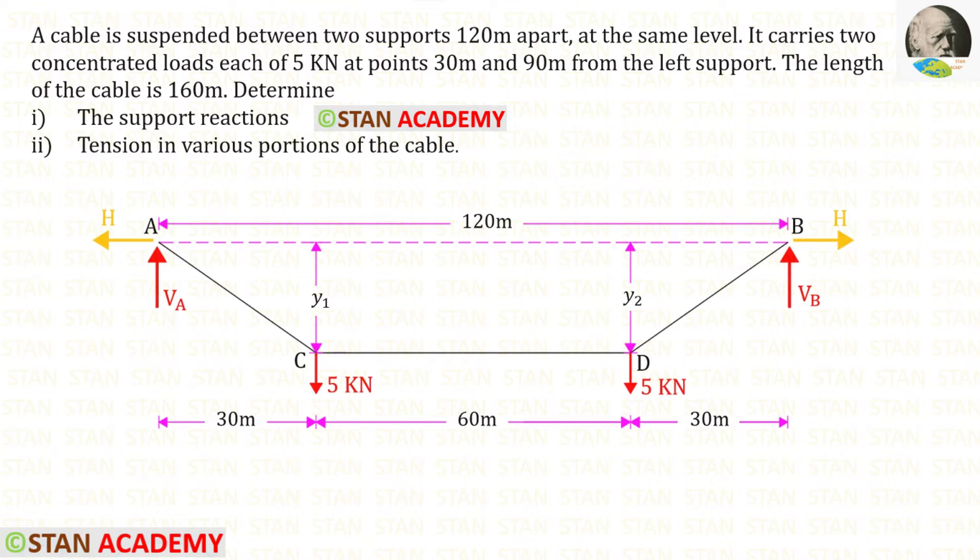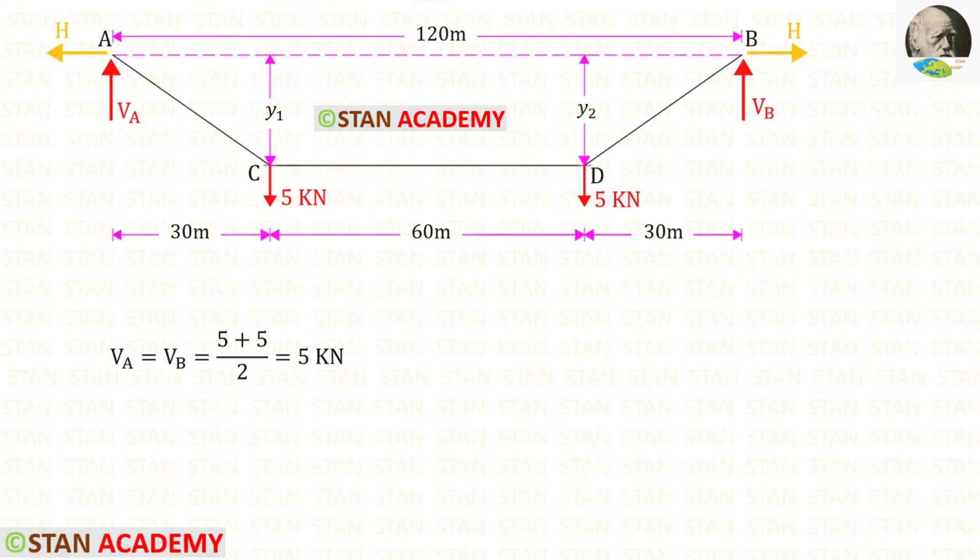In this question, first we have to find the support reactions. Let us find the vertical reactions Va and Vb. Since there is symmetrical loading, we can easily find them. For that, we have to add both of these two loads and then divide that by 2. In this way, we will get Va and Vb. Both of them are 5 kilonewtons.